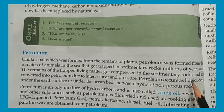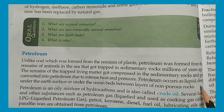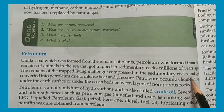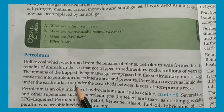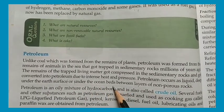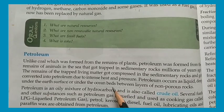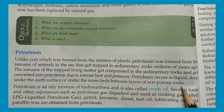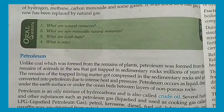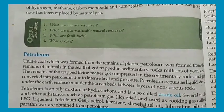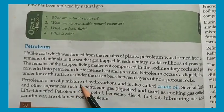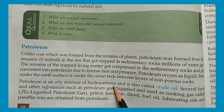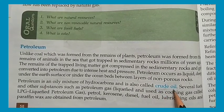The petroleum occurs as a liquid deep under the earth. It is found under the sea and present between layers of non-porous rocks. Petroleum is a mixture of hydrocarbons, and it is also called crude oil.